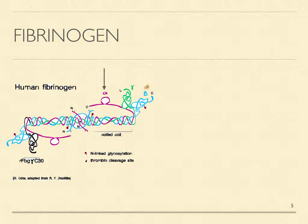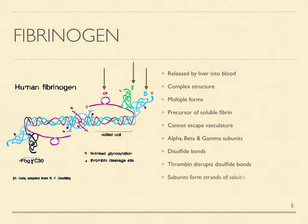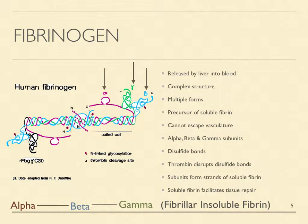Fibrinogen, soluble fibrin, and insoluble fibrin are closely related and chemically similar, so they were persistently confused with one another during the era of stress research. The liver continuously releases fibrinogen into flowing blood. It is a structurally complex protein molecule that exists in multiple forms. It is the precursor of soluble fibrin and cannot escape the intact vasculature.